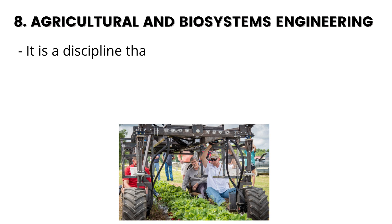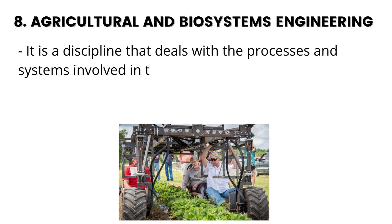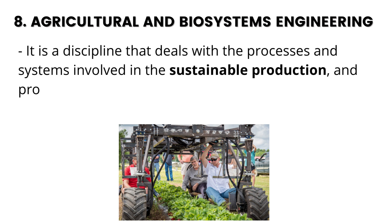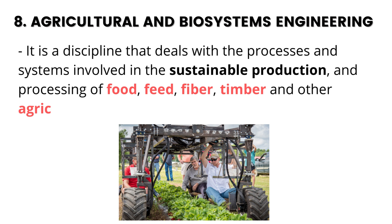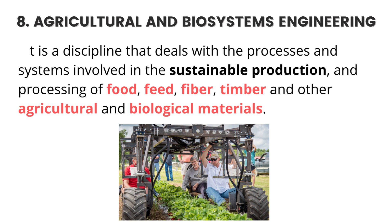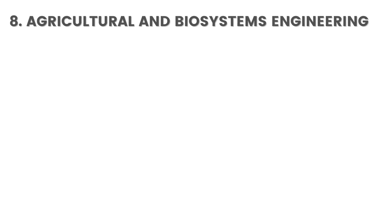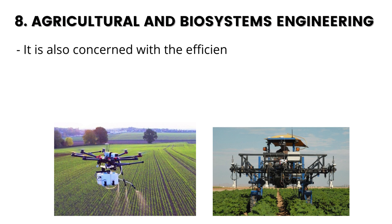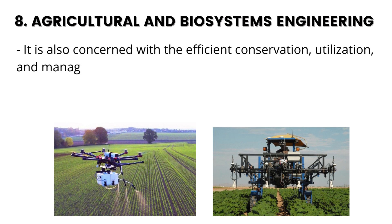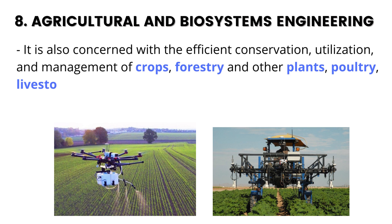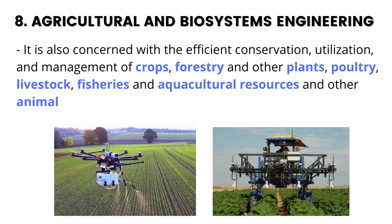8. Agricultural and Biosystems Engineering. It is a discipline that deals with the processes and systems involved in the sustainable production and processing of food, feed, fiber, timber and other agricultural and biological materials. It is also concerned with the efficient conservation, utilization, and management of crops, forestry and other plants, poultry, livestock, fisheries and aquacultural resources and other animals.